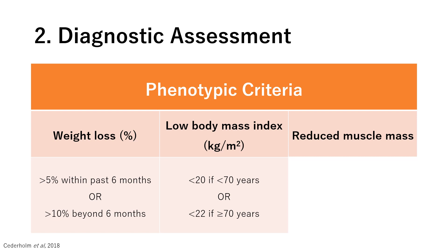For the BMI criterion, if a patient's BMI falls below 20 kg/m² and they are under 70 years old, they meet the criteria. If the patient is 70 years or above, their BMI should fall below 22. There is a different criterion for the Asian population: less than 18.5 for under 70 years, and under 20 for 70 years and above.